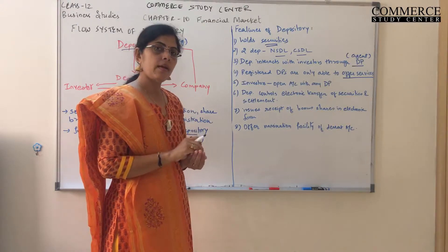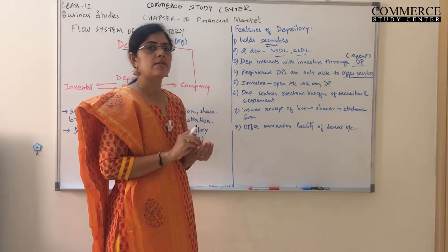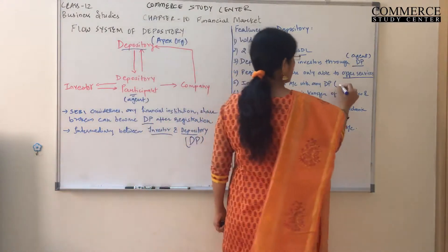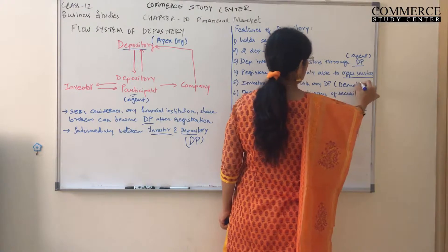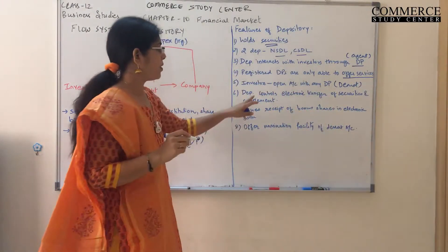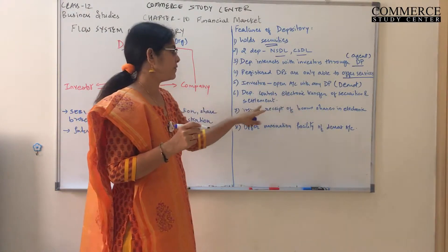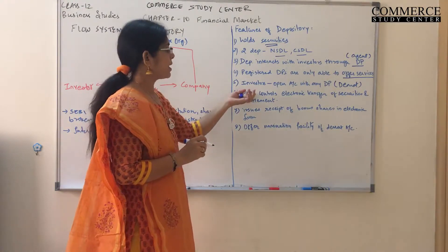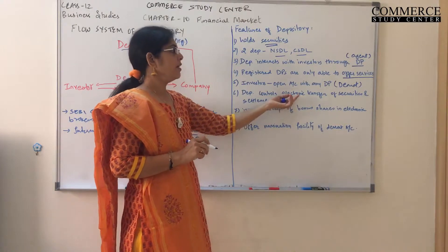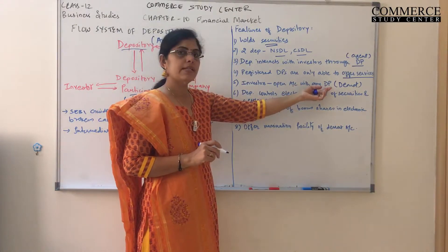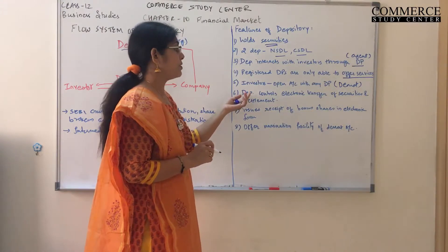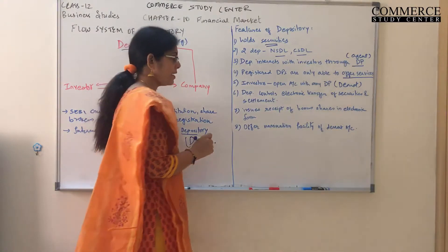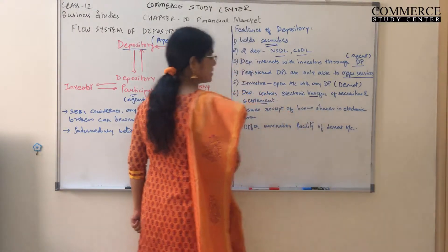Investors can open their demat account with any share broker or partnership firm which is called a depository participant. The depository controls the electronic transfer of securities and settlement of transactions. The depository participant gets authority from the depository, and the depository has a check on all transactions — whether it is a transfer or a settlement.